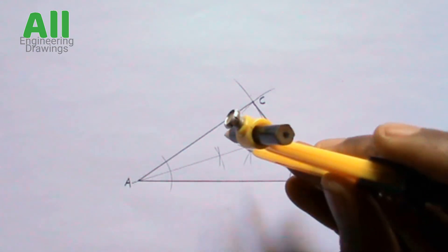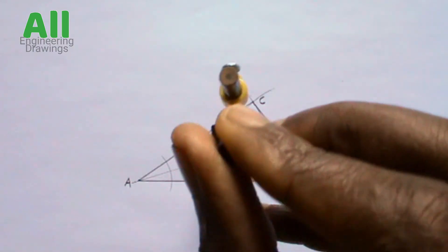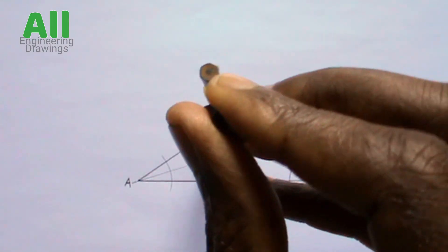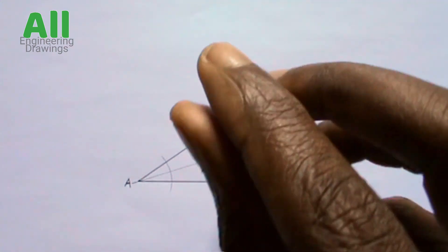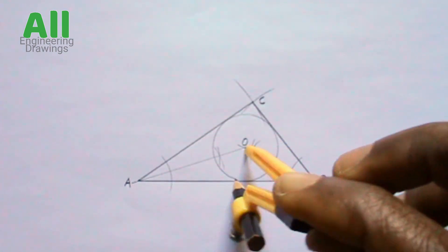Now place your compass on point O. Then you can now draw your inscribed circle. Your circle should just fit into your triangle if your construction is accurate.